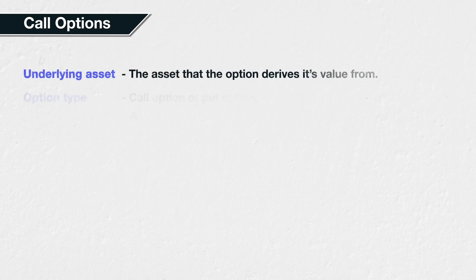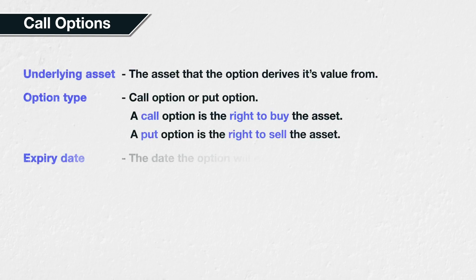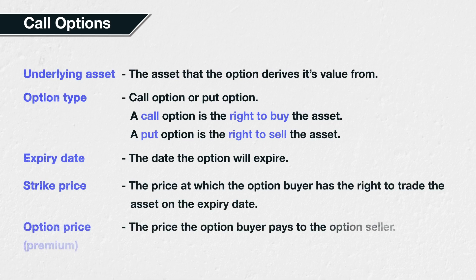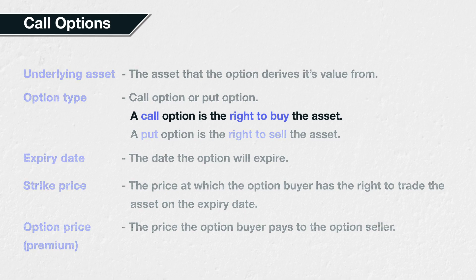As we covered in lecture 2.2, an option has five main parameters: the underlying asset, the option type, the expiry date, the strike price, and the option price. In section 3, we will be focusing specifically on the call option type.